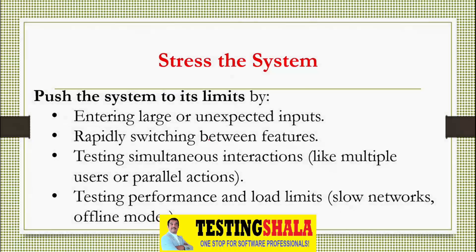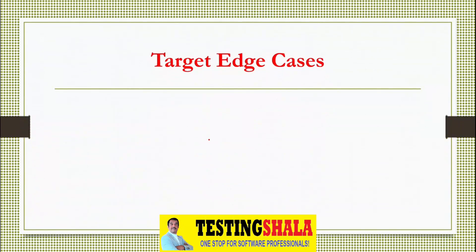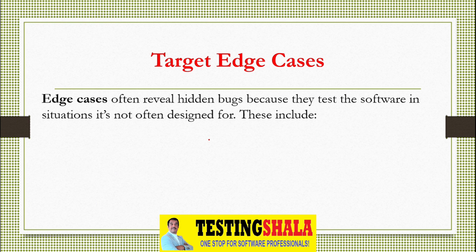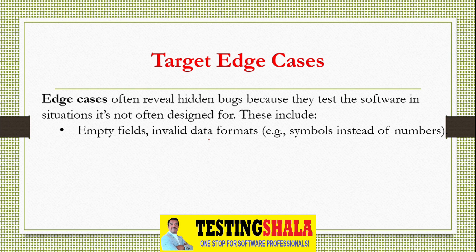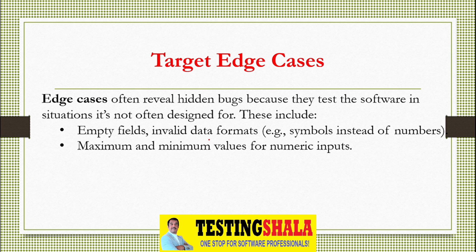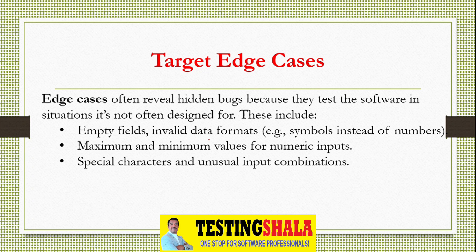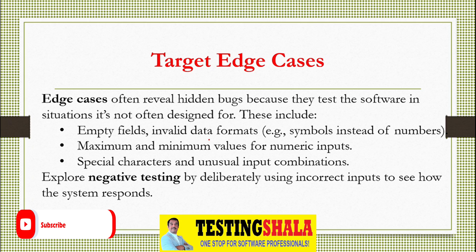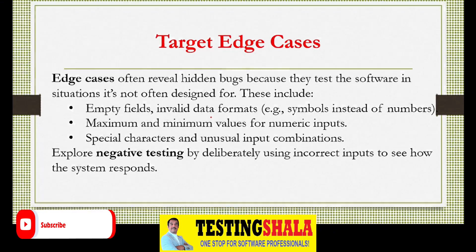The next method is targeting edge cases. If we target edge cases for an application, we can find a lot of hidden bugs — such as empty fields, invalid data formats, maximum and minimum values for numeric inputs, special characters, and unusual input combinations. Exploring negative testing as well allows us to find more defects in the application.